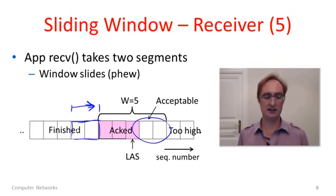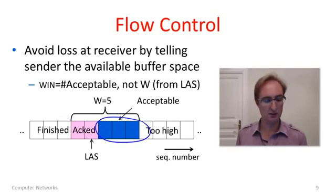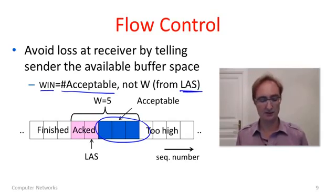What we would like to do with flow control is come up with a mechanism whereby we avoid these kinds of losses at the receiver. And we can do that by simply telling the receiver how much buffer space is available. So what we would like to tell the receiver is that for instance here there are three buffer spots available. That's this Win, the flow control window, which is the number of acceptable segments or the buffer size there. We want to tell it that and not information about W, which the sender knows anyhow. And this Win, number of acceptable buffers, they're measured from LAS from where you sent the last ACK because they're the next higher segments which could be received.